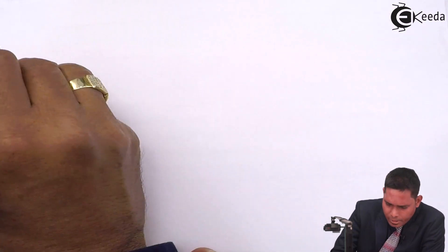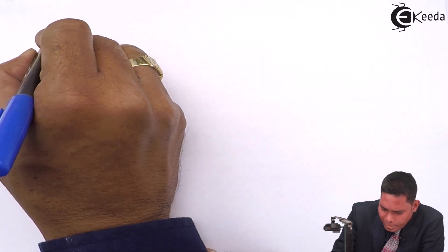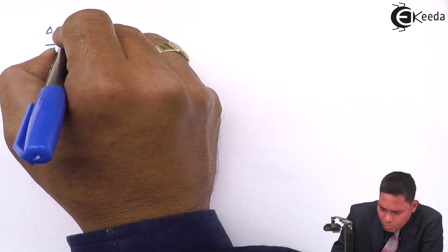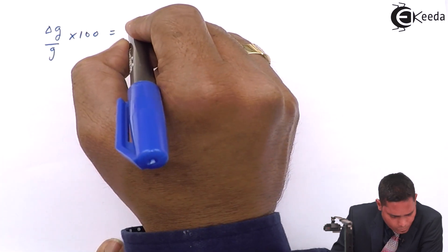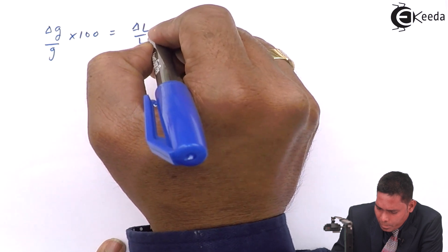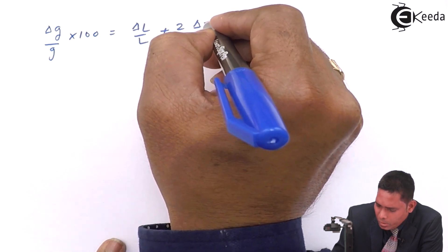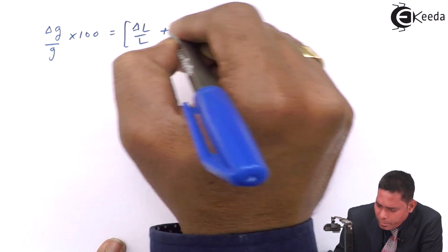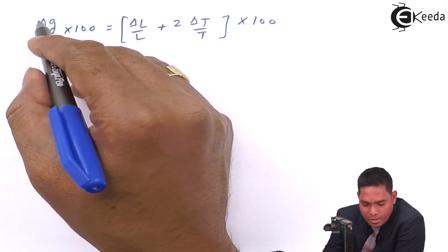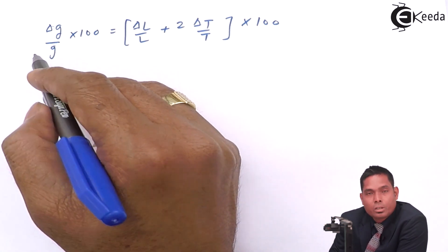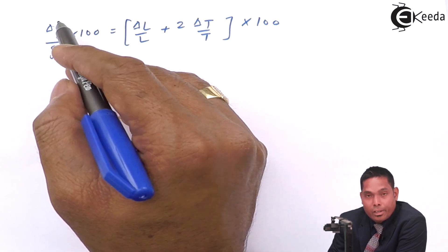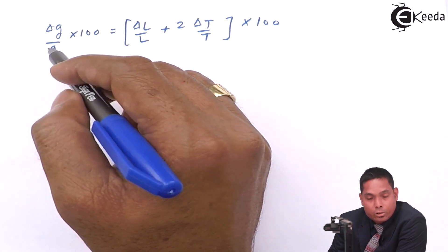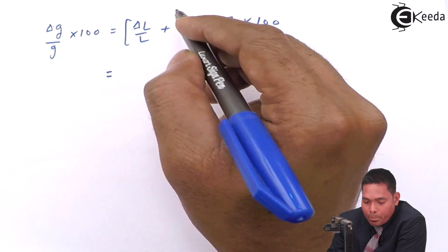Let me write the formula again: Δg/g × 100 equals (Δl/l + 2Δt/t) × 100. Now the percentage error in the measurement of the acceleration due to gravity, that is the accuracy in the measurement of acceleration due to gravity, can be found by putting the values and solving it.